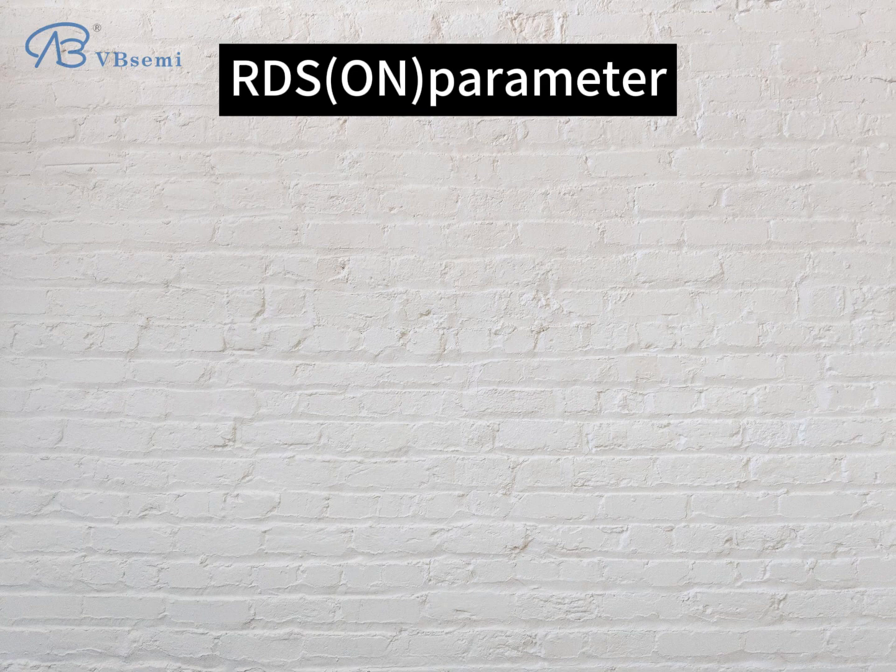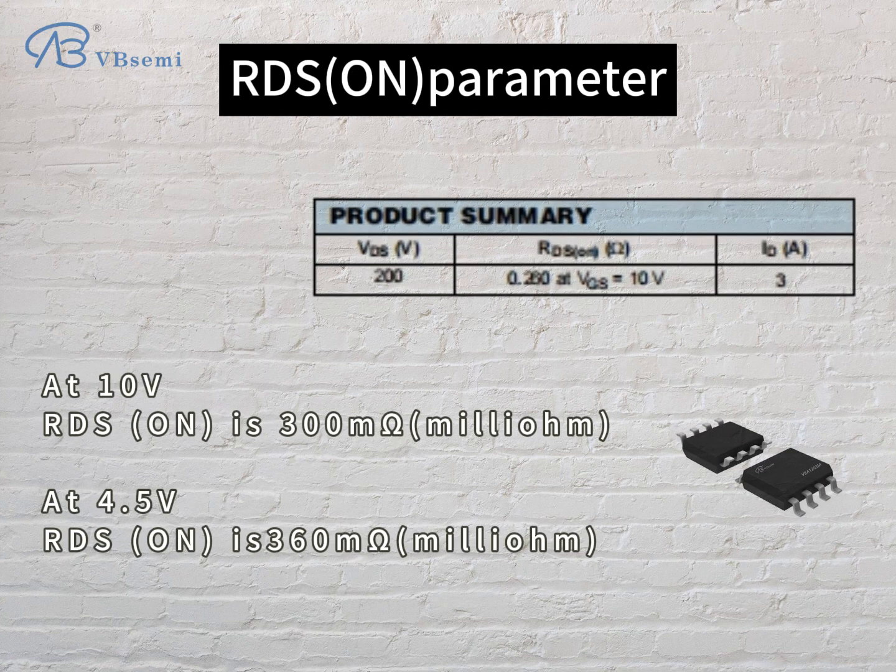RDS(on) parameter: at 10V, RDS(on) is 300mΩ; at 4.5V, RDS(on) is 360mΩ.